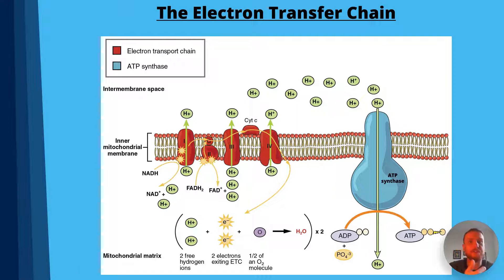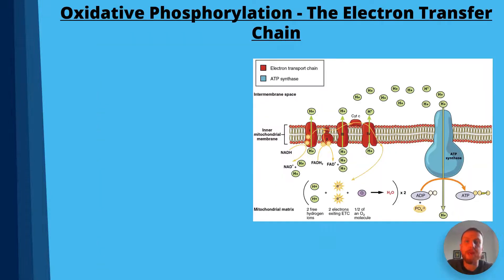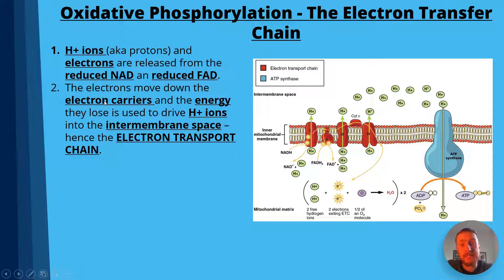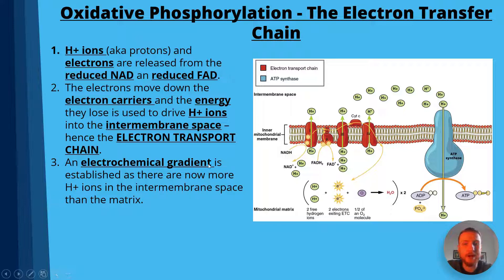Step one: hydrogen ions (protons) and electrons are released from the reduced NAD and reduced FAD. Step two: the electrons move down the electron carriers and the energy they lose is used to pump the hydrogen ions across the membrane into the intermembrane space — this is where the name 'electron transfer chain' comes from. Step three: an electrochemical gradient is established — electrochemical because of the charge of the protons and the chemical nature of the hydrogen — with more H+ ions in the intermembrane space than in the matrix.